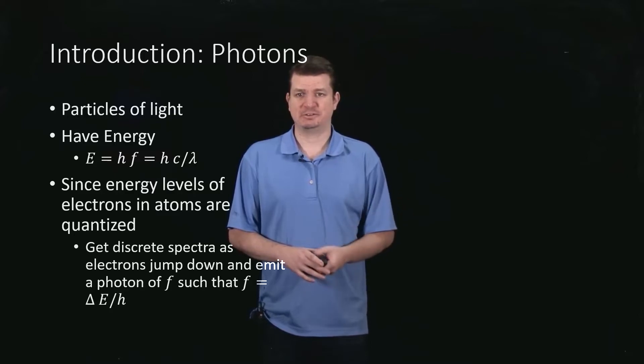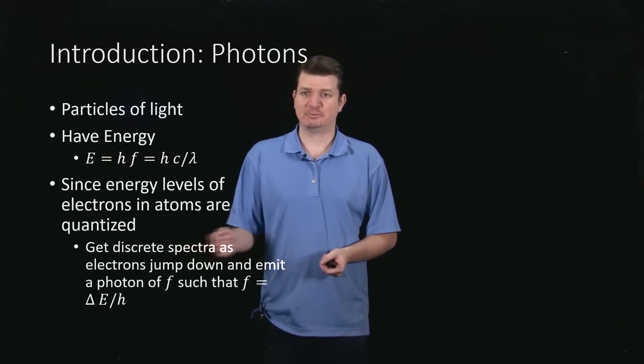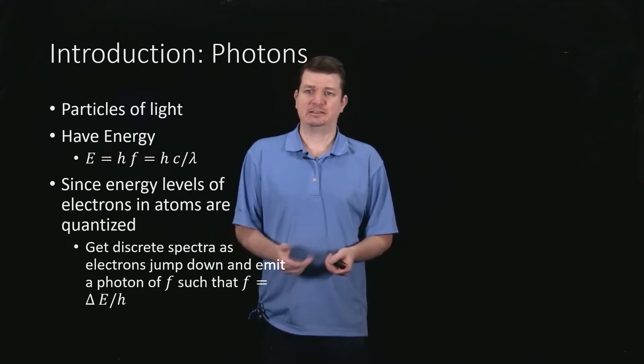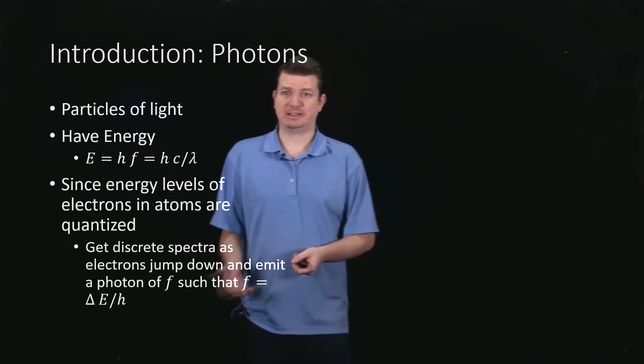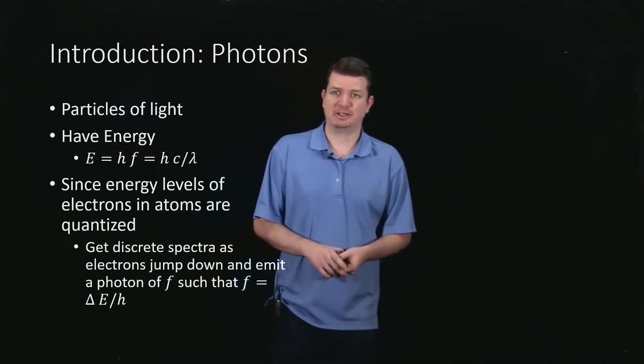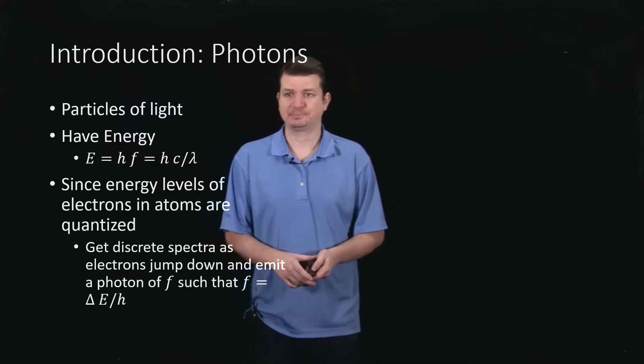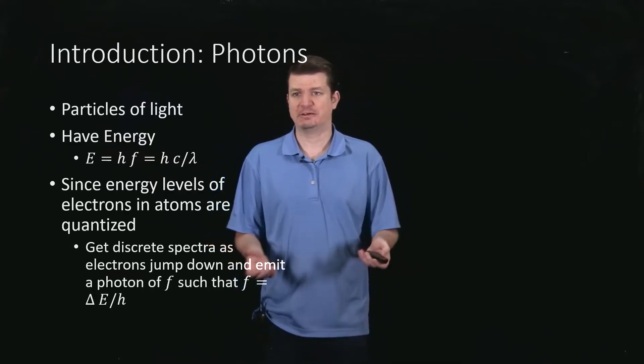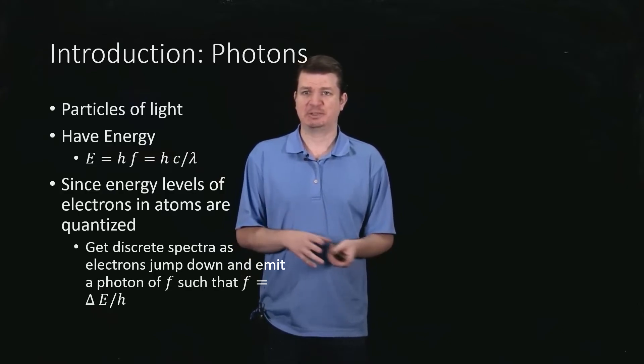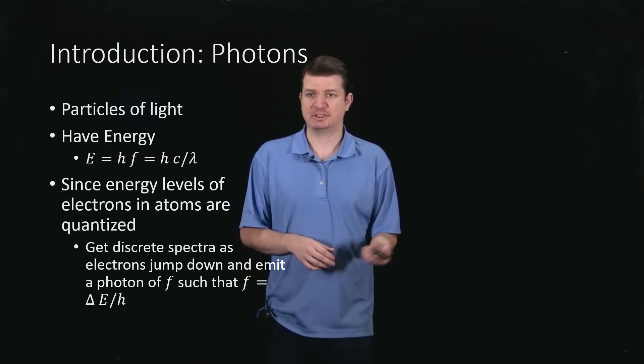they emit discrete amounts and so the frequency must be that energy difference delta E divided by Planck's constant. So we've now explained, if we make this assumption, we've explained why we get nice discrete spectra.